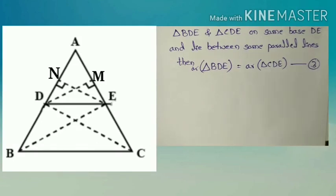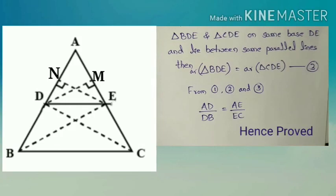From equation number 1, 2, 3, we will get here AD by DB equal to AE by EC. Hence our theorem proved.